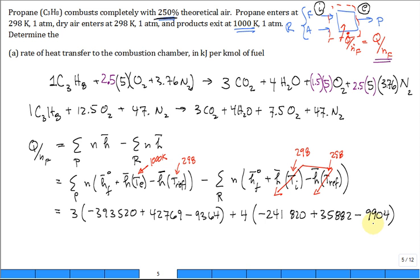We go to the oxygen in the products. It's going to be the coefficient, 7.5, so it's a plus, times the enthalpy of formation for the oxygen, zero. The enthalpy at 1000 Kelvin, 31,389. The enthalpy of reference, 8682.